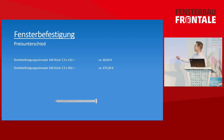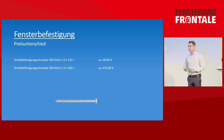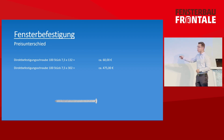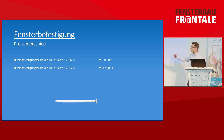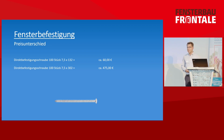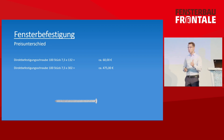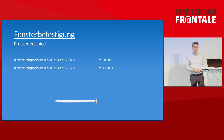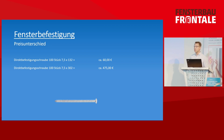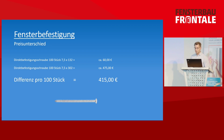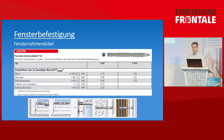The cost implications are significant. Direct attachment using 100 pieces of 7.5×132 screws costs around 60 euros. But for lightweight perforated brick you may need a 302 screw, bringing the cost to 475 euros — a difference of 450 euros. This means planning must be done at an individual level and cannot simply be calculated per linear meter.